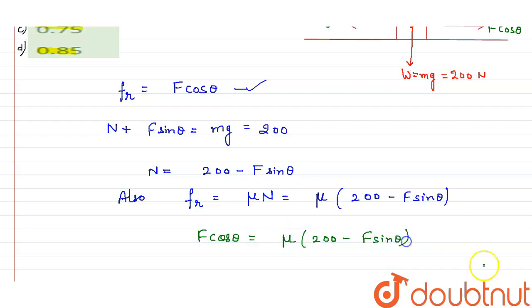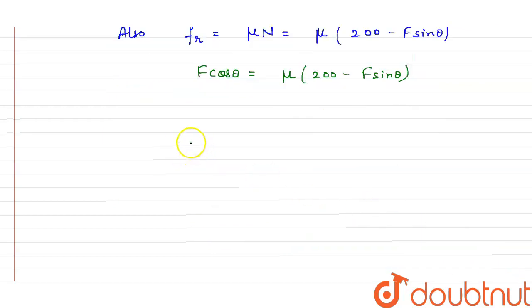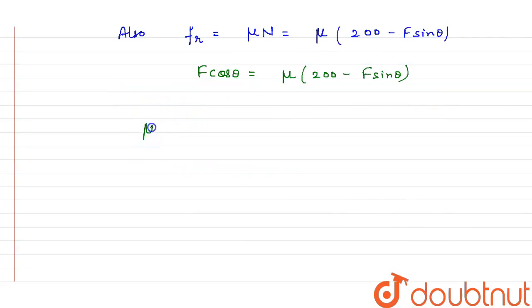Then after what we have to do, simply evaluate it, or we can say that the value of μ will become F cos theta divided by 200 minus F sin theta.